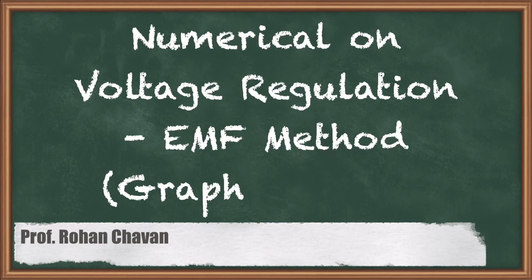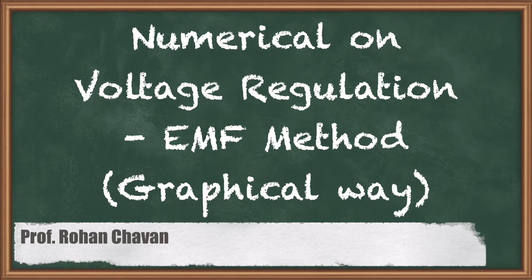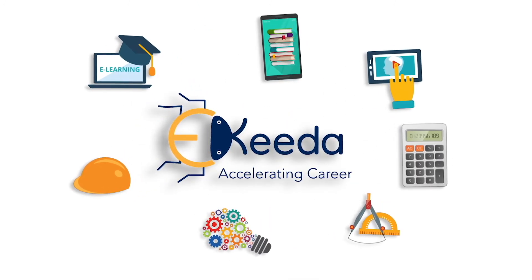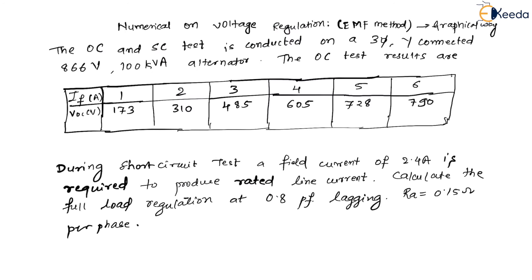In this session we will see numericals on voltage regulation using the EMF method, including the graphical way method. Open circuit and short circuit tests are conducted on a three-phase star-connected 866 volts, 100 kVA alternator. The OC test results are presented with field current IF in amperes, which is DC.